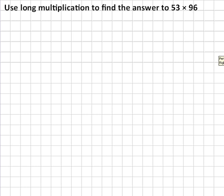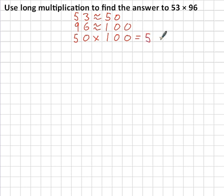You probably know by now what I'm going to start with. 53 is roughly equal to 50, 96 is roughly equal to 100. 50 times 100 equals 5,000. So my estimate to the question 53 times 96 is 5,000.